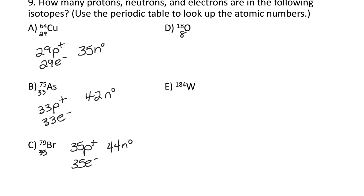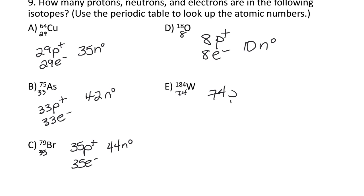Oxygen is atomic number 8: 8 protons, 8 electrons, and 18 minus 8 is 10 neutrons in this isotope. Tungsten (W) is 74 — W stands for tungsten. It has 74 protons, 74 electrons, and 184 minus 74 is 110 neutrons in this isotope.